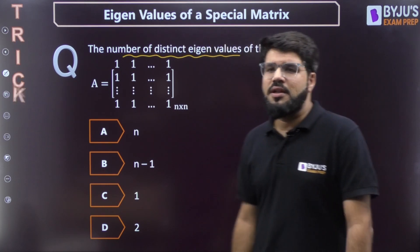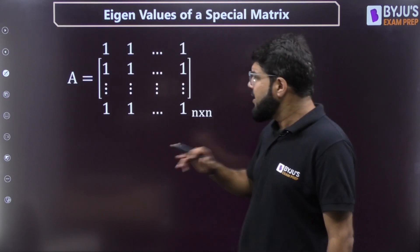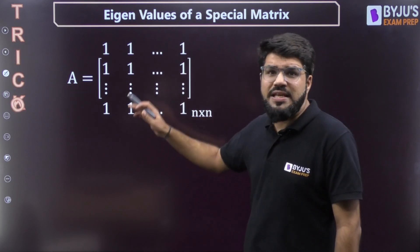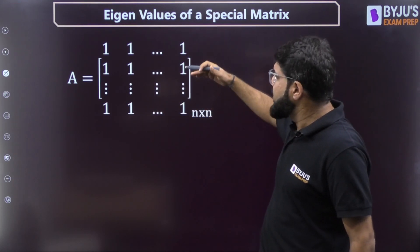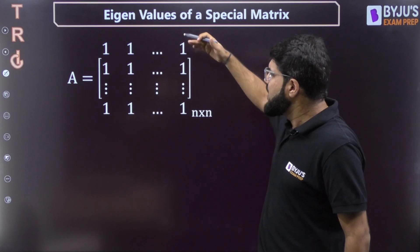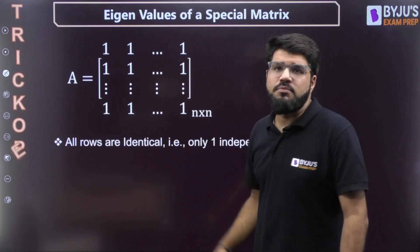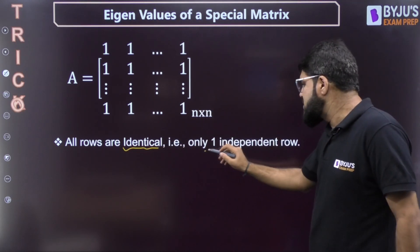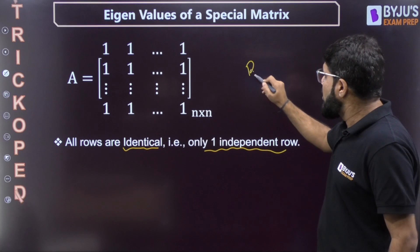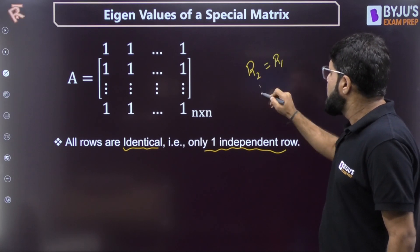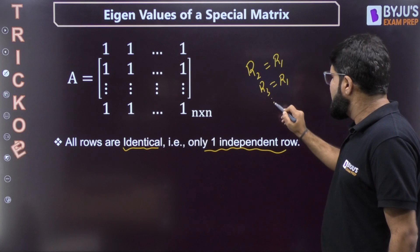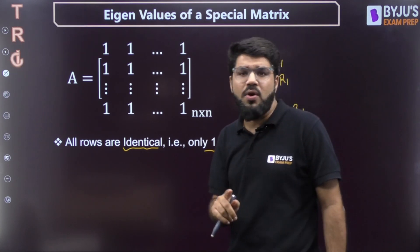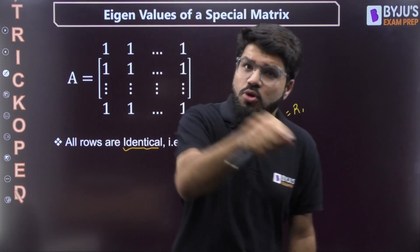Here is the matrix written once again. You can see that all elements are one, which makes all rows identical. The first row is [1, 1, 1, 1, 1, 1], the second row is the same, and so on — all rows are identical to each other. That means there is only one independent row, because R2 = R1, R3 = R1, and every row up to the nth row depends on R1.